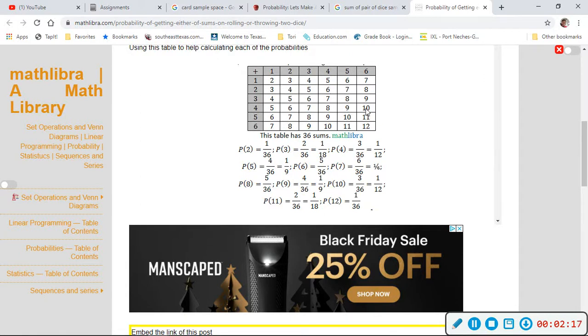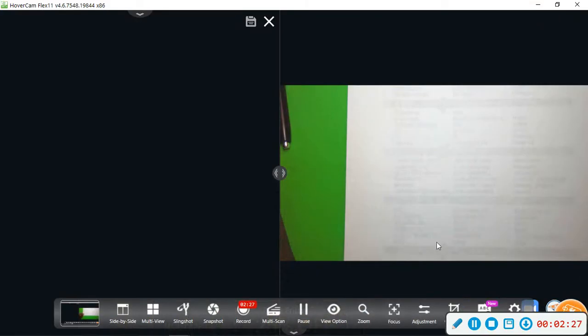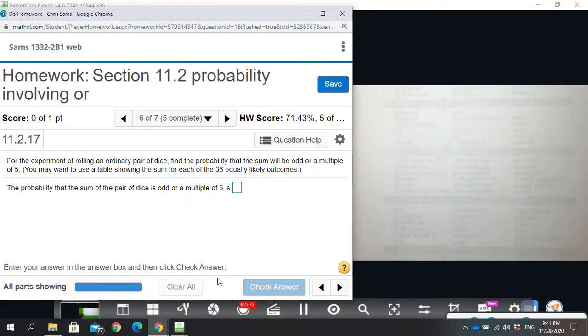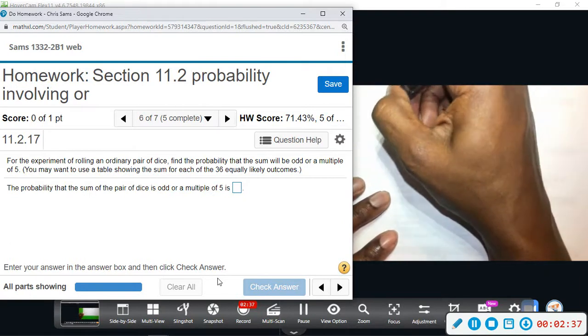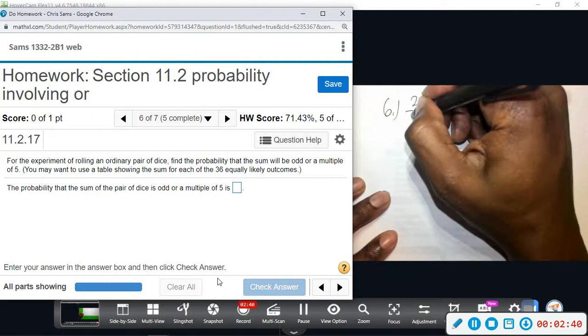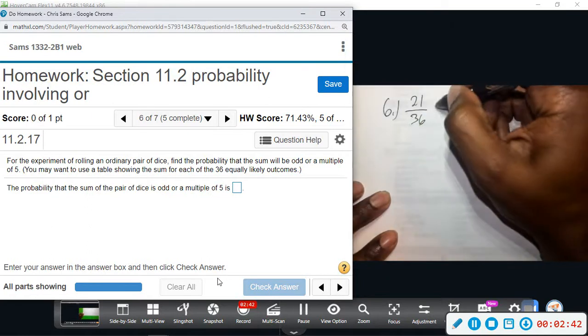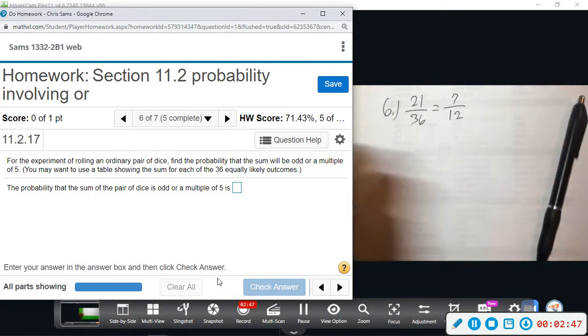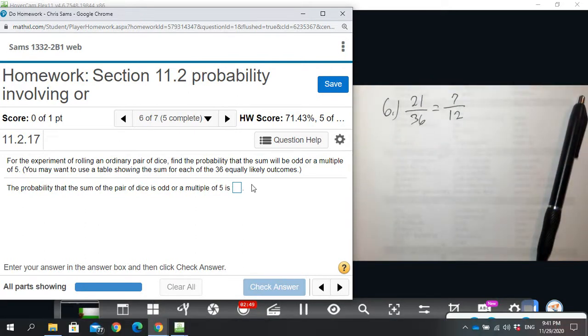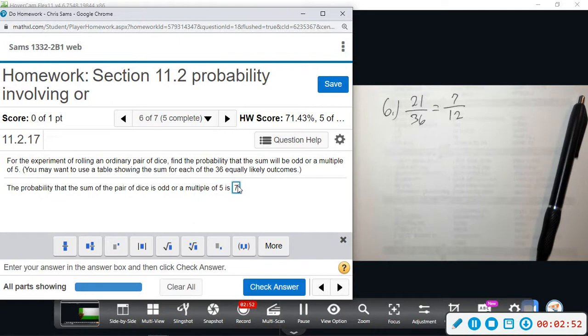So you got 18 that are odd, and that's including the fives though. Those are multiples of five. 18, and then you have one, two, three tens. So 18 plus 3 gives you 21. So for number six we have 21 out of 36. Both of these are divisible by 3, so that will give us 7 over 12. The probability of odd or multiple of 5 is 7 out of 12.